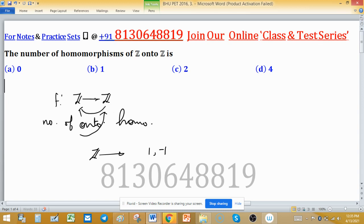So for onto homomorphism, number of onto homomorphisms will exist if they generate, these two elements generate the image. It means only two onto homomorphisms exist.